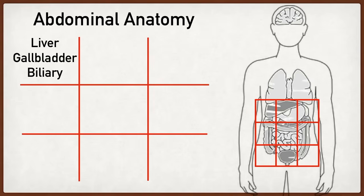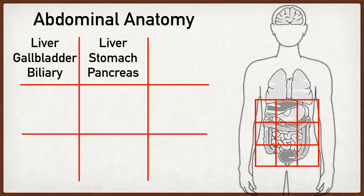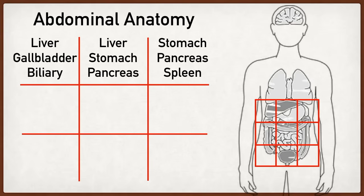Moving over to the epigastric region, the liver extends to this quadrant as well, and it also includes the stomach and pancreas. The left upper quadrant or left hypochondriac region includes parts of the stomach as well as the pancreas and spleen. Moving on to the midsection, starting with the right lumbar region, we're going to have the colon — primarily the ascending colon in that right lumbar region.